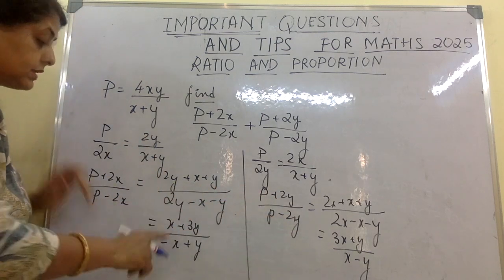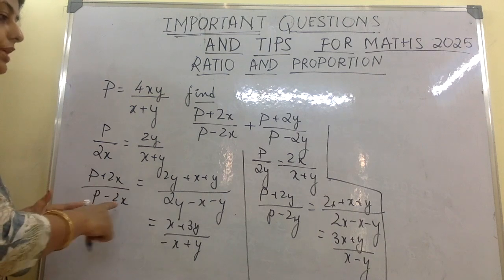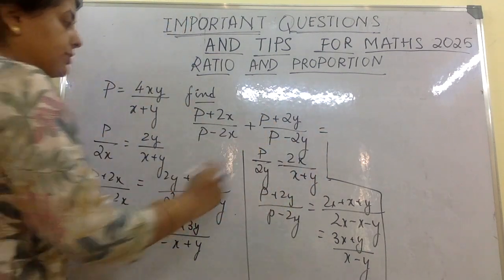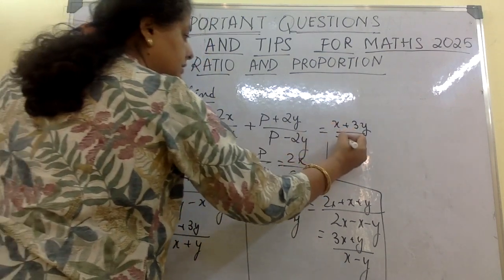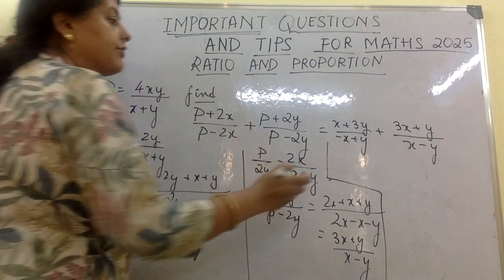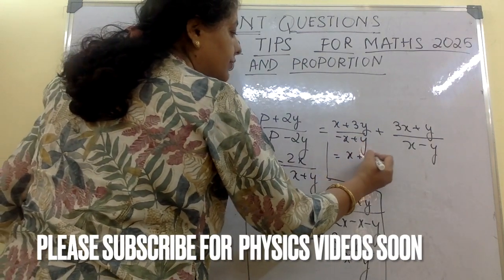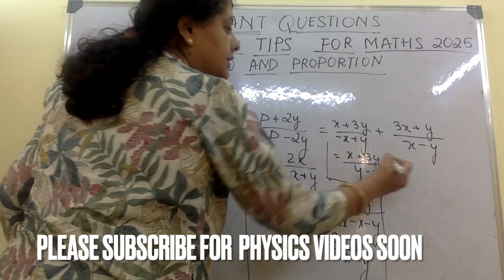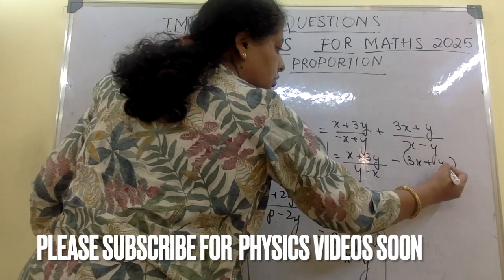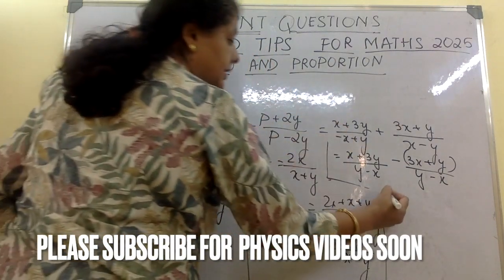Now I have both parts. Adding (p + 2x)/(p − 2x) and (p + 2y)/(p − 2y): the numerator gives (x + 3y) + (3x + y), and for the denominators I rewrite (−x + y) as (y − x) and (x − y) as −(y − x) to make them the same. So the combined numerator over the common denominator (y − x) is: (x + 3y − 3x − y) / (y − x).